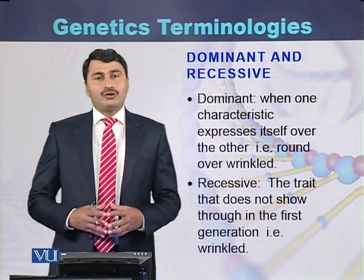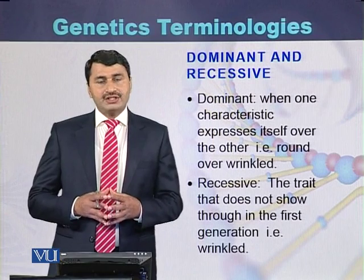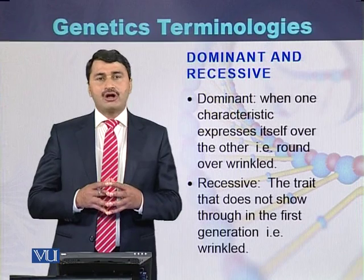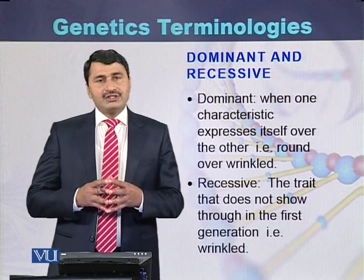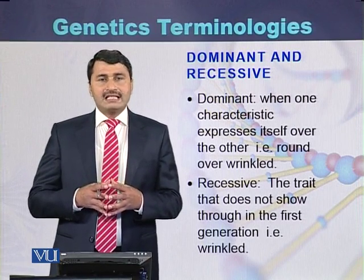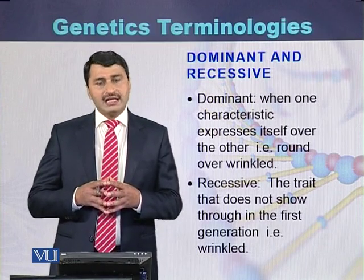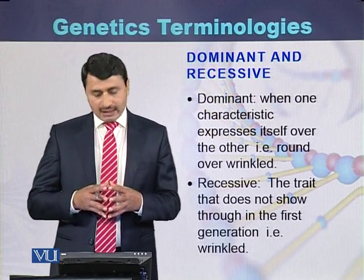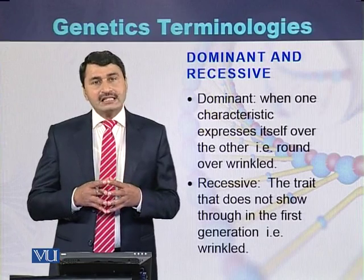What is the meaning of dominant and recessive? During a cross, when one trait expresses itself over the other, that trait is called dominant, while the trait which is masked by the other is called the recessive trait. For example, round is dominant over wrinkled — so round is a dominant trait while wrinkled seed is a recessive trait.